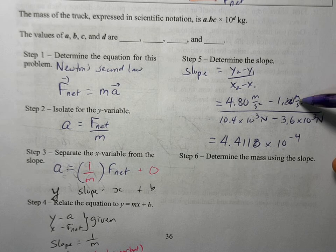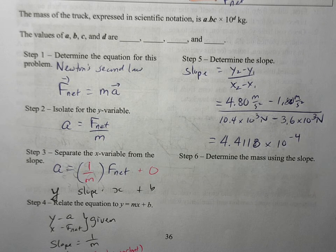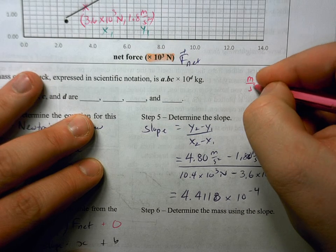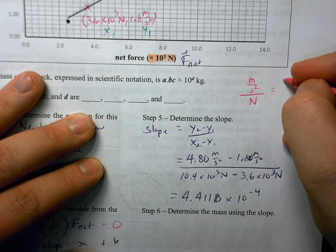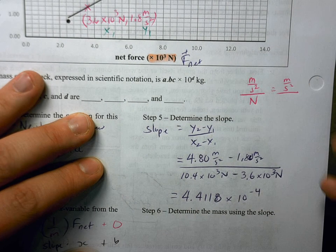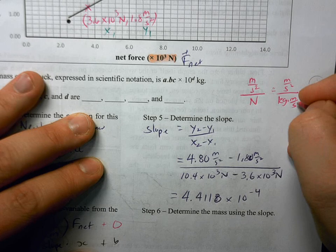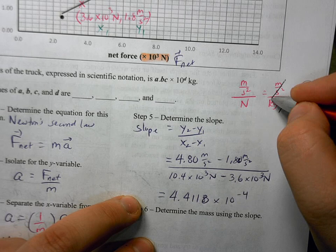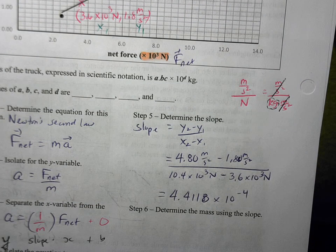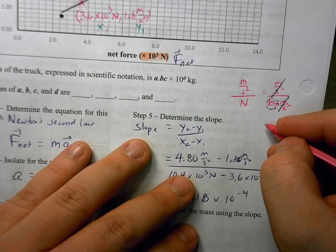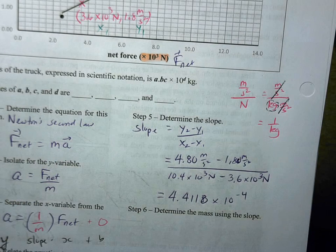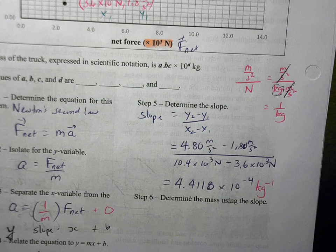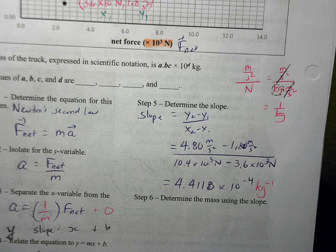Now we have meters per second squared up top divided by newtons. What's that going to look like? I've got meters per second squared divided by a newton. We know our definition of the newton is a kilogram times meters per second squared. So the meters per second squared up top, they're going to take care of that meters per second squared in the bottom. So what we have left is we have a kilogram, but it's in the bottom. So this is what we have left over: one over kilograms as our units, or we might say kilogram inverse. If you want to say one over kilograms, that's perfectly fine.